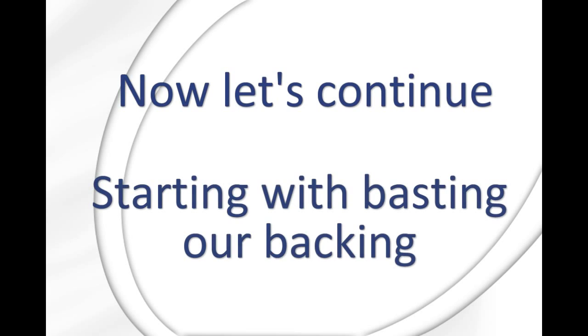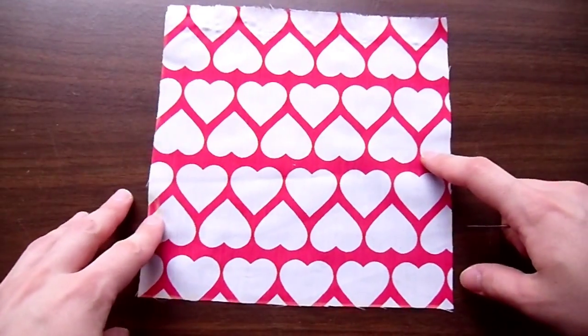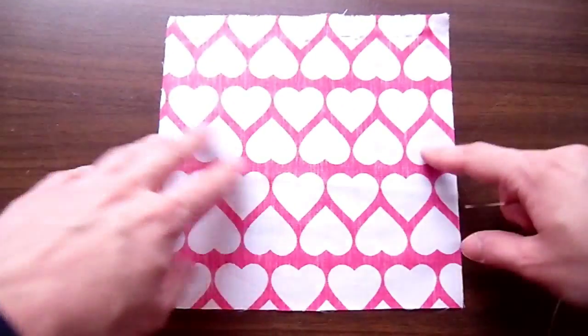Now let's continue, starting with backing. Lay down the backing piece wrong side up and center the quilted piece on top.